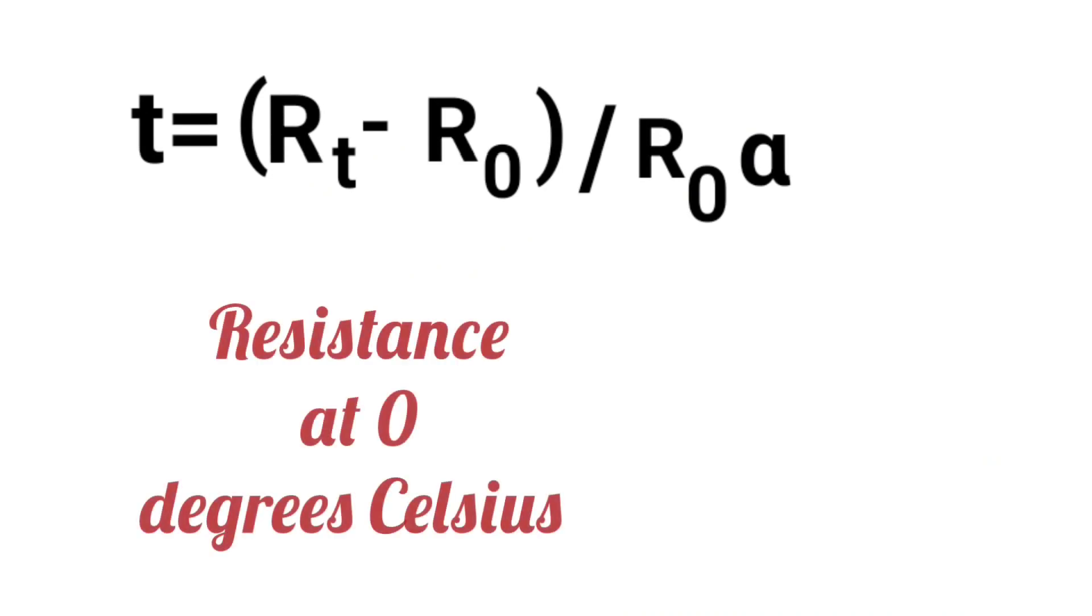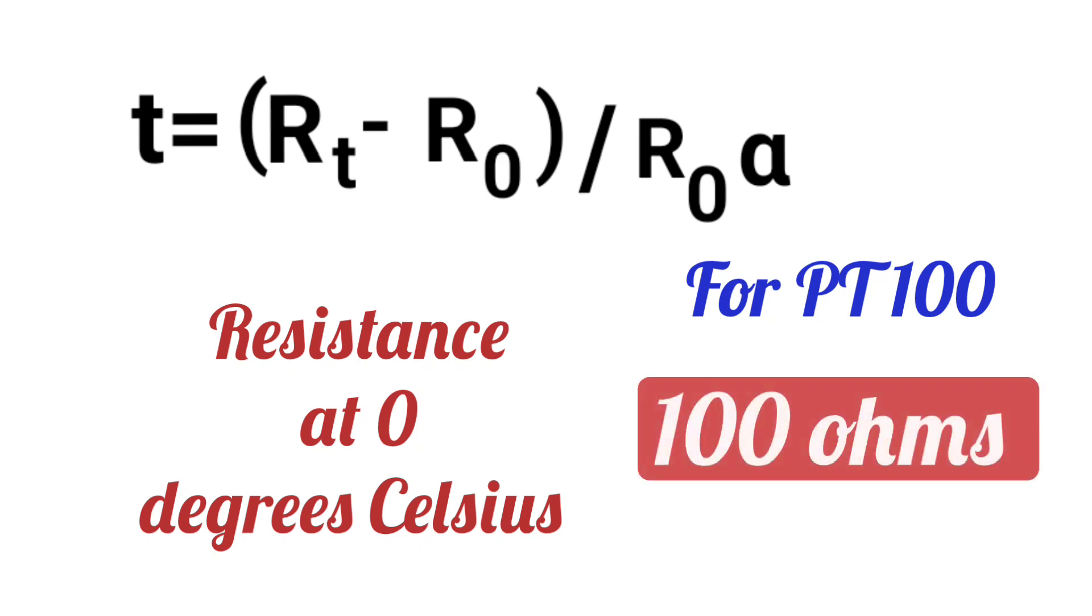R_0 is the resistance at 0 degrees Celsius. For PT100, the value of R_0 is 100 ohms.